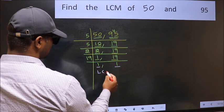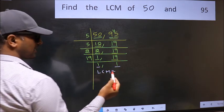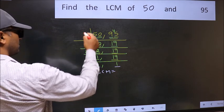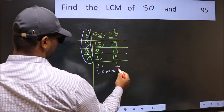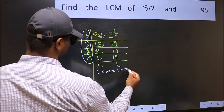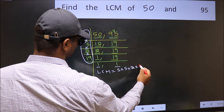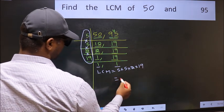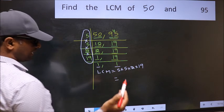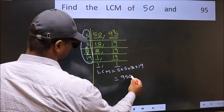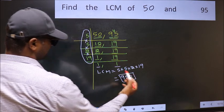So our LCM is the product of these numbers. That is 5 into 5 into 2 into 19. When we multiply these numbers, we get 950 is our LCM.